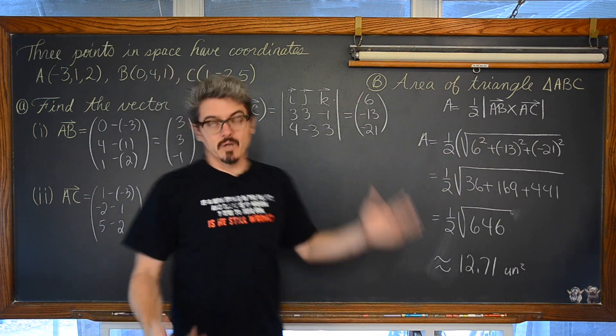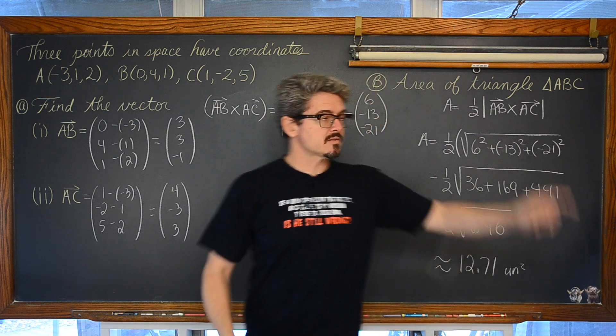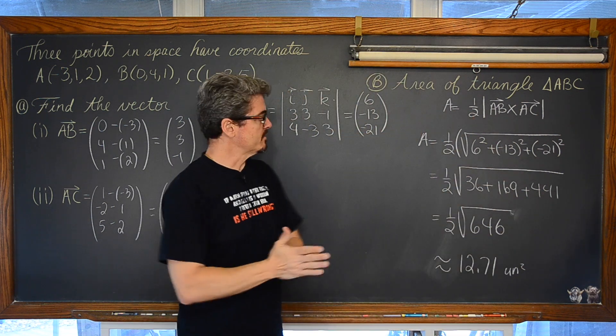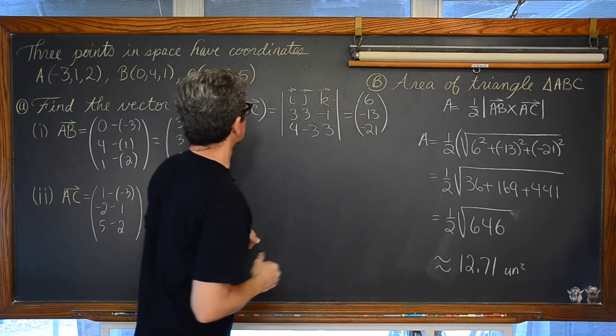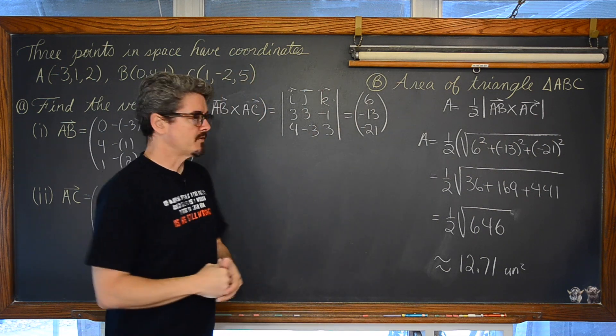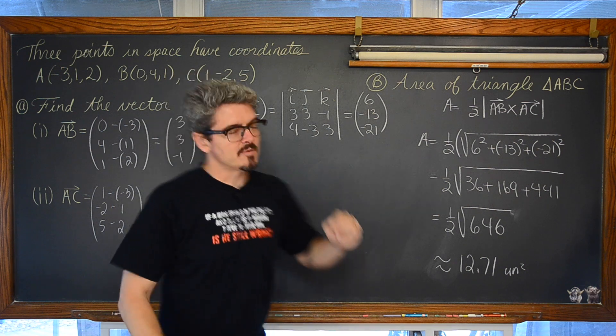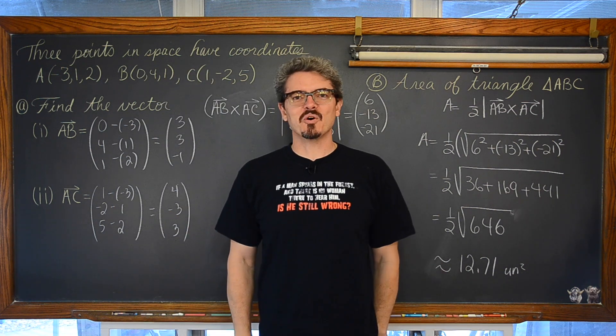That is how you find a component form of vectors in three space, and a quick review, introduction of how to find the area of a triangle using vectors which are defining two of the three sides of that triangle. I am Mr. Tarrou. BAM! Go do your homework!